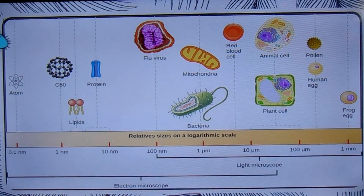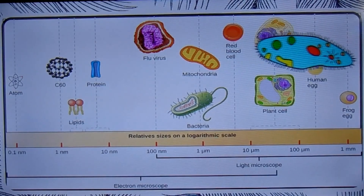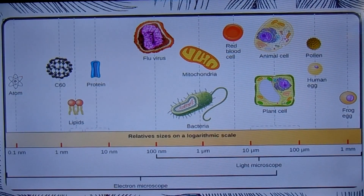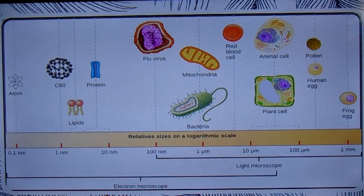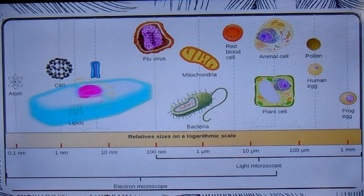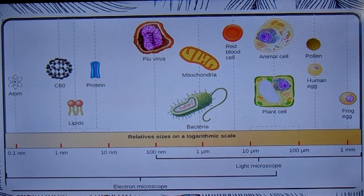A paramecium in a drop of pond water is shaped like a submarine and is covered with thousands of cilia — hair-like extensions whose continuous beating sweeps the cell forward. A cell in the surface layer of a plant is square and immobile, surrounded by a rigid box of cellulose with an outer waterproof coating of wax.